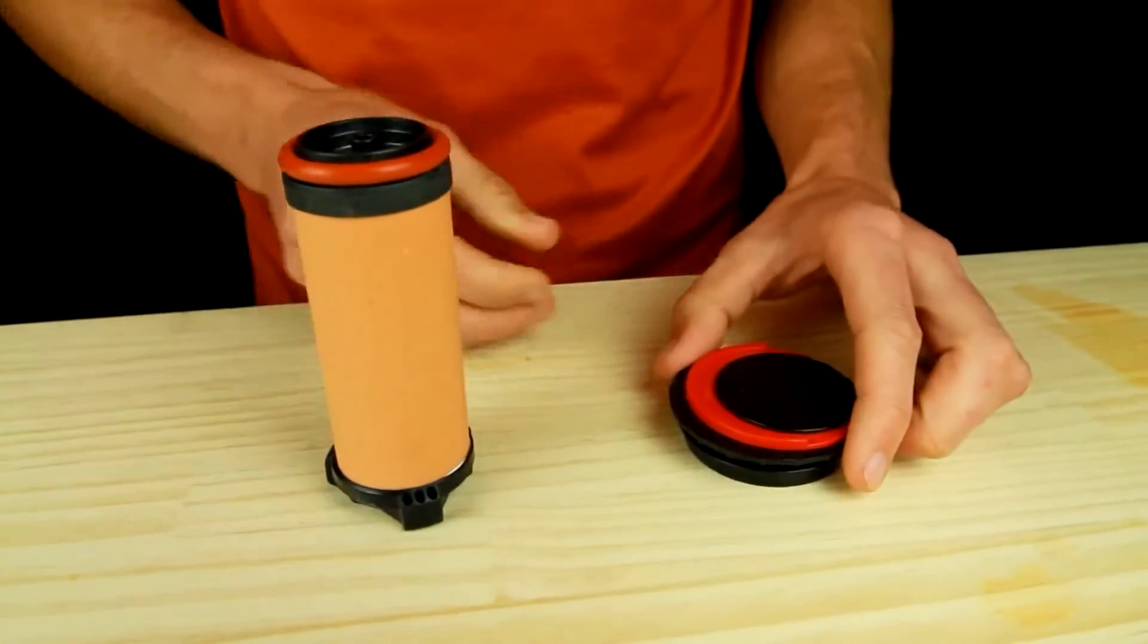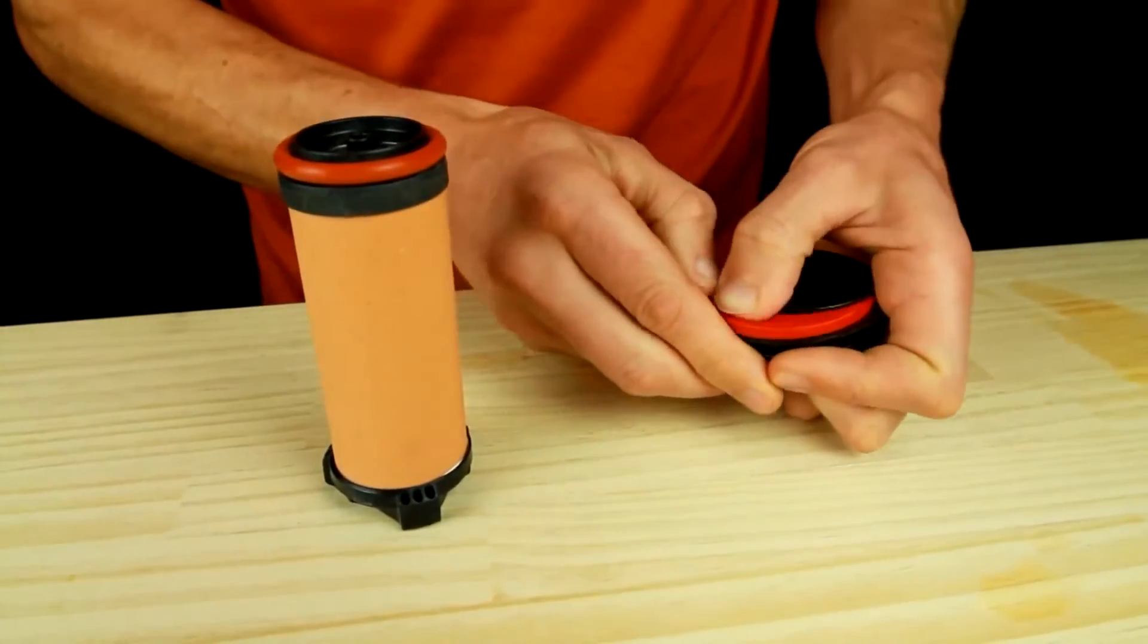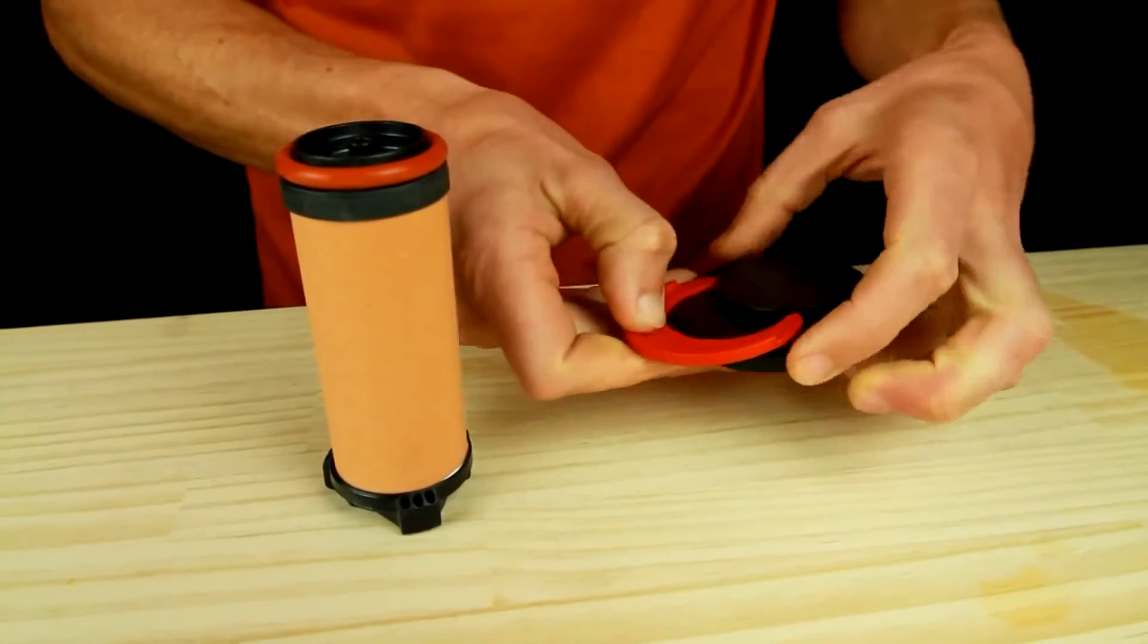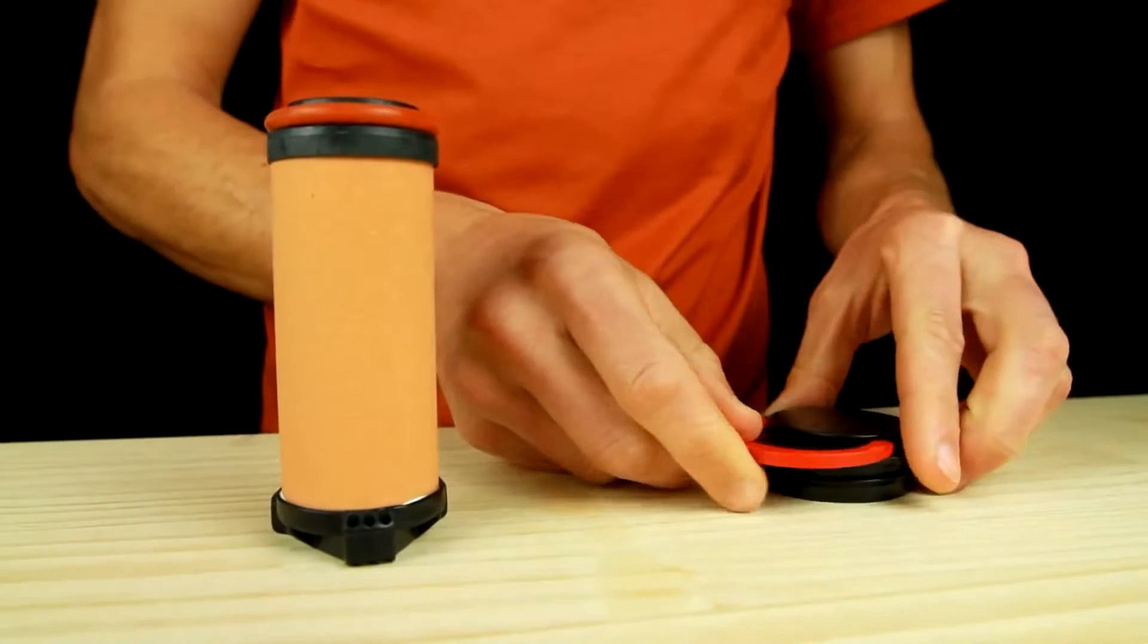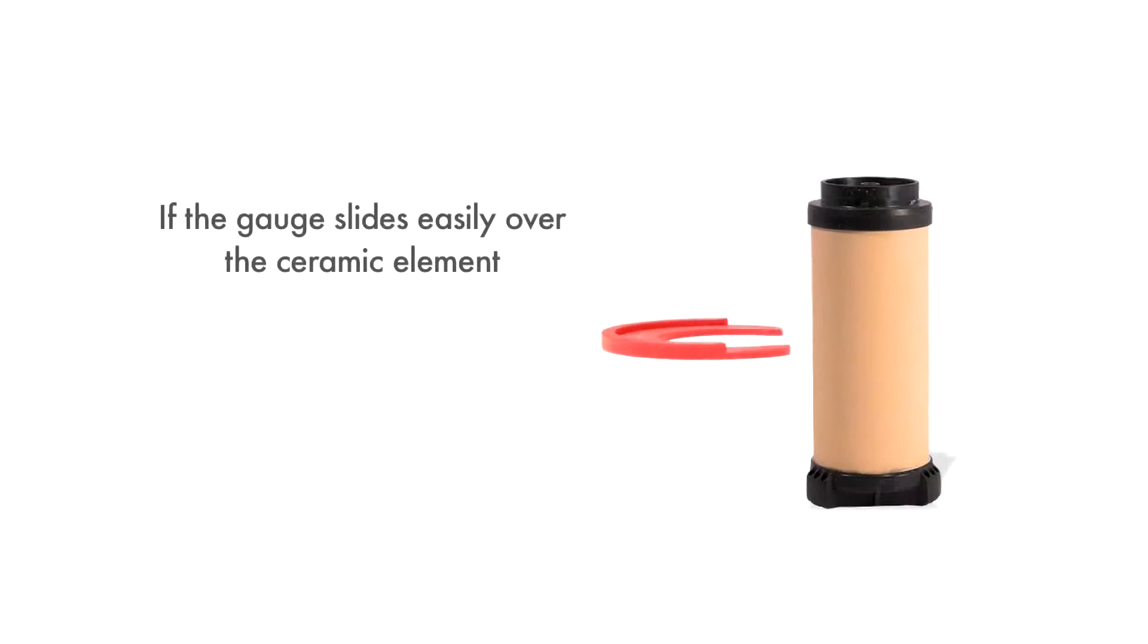You should measure the ceramic element every time you finish cleaning it. Remove the gauge from the clean side cover and test whether it can fit across the ceramic element. If the gauge slides easily across the ceramic element, then it's worn out and needs to be replaced.